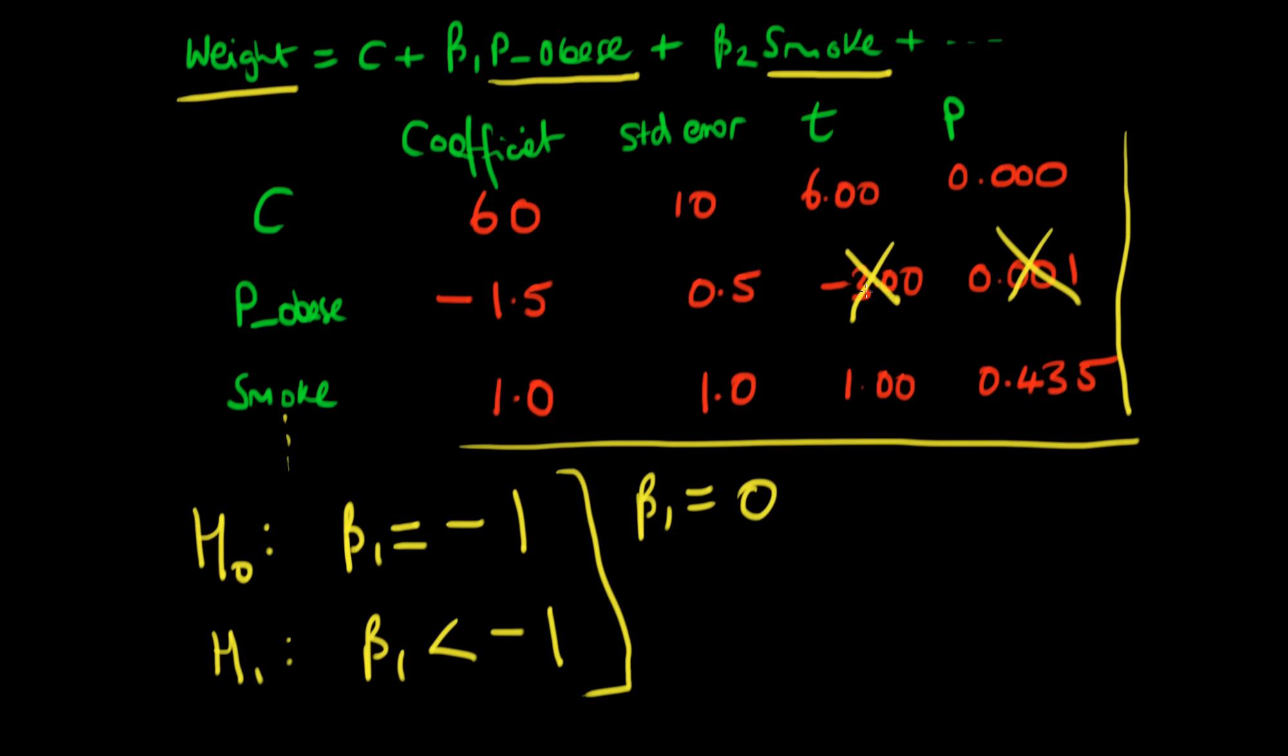So we would actually have to construct either manually or after we run the regression we would have to get our statistical program to construct new t and p estimates for that particular variable. But we can do it manually right? It's not that difficult to do.